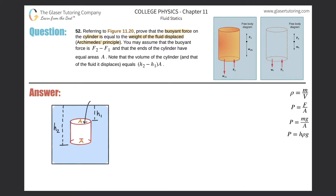So here we have a cylinder submerged in water. There are going to be two particular forces acting on this cylinder, regardless of its weight. The first force is the one pushing down on top of the cylinder — there is a column of water above it, so there's a certain weight of water pushing down on the top part of the cylinder.